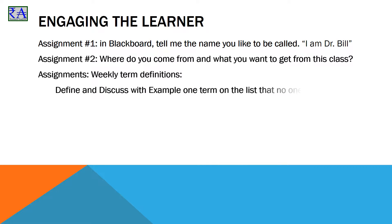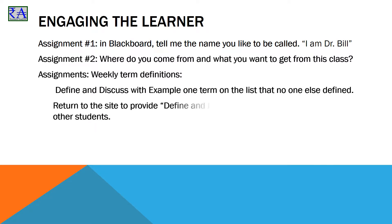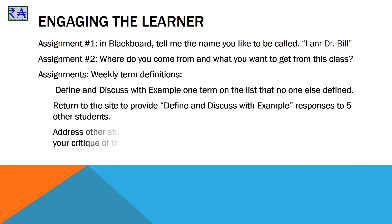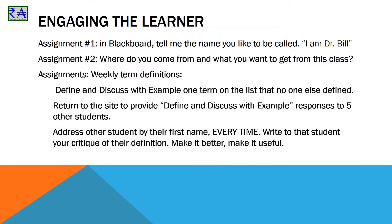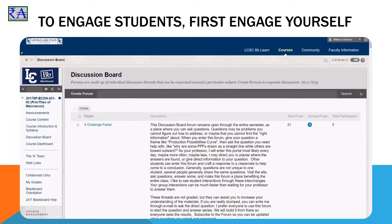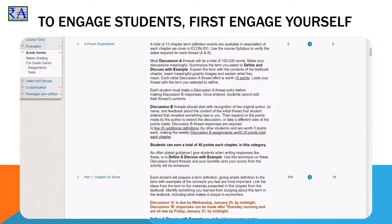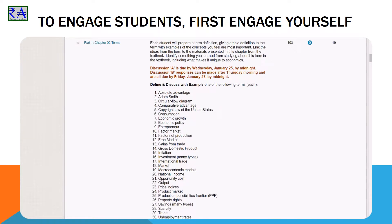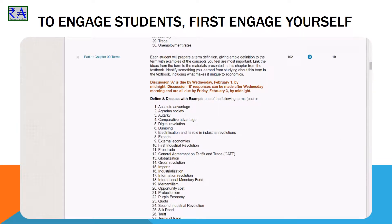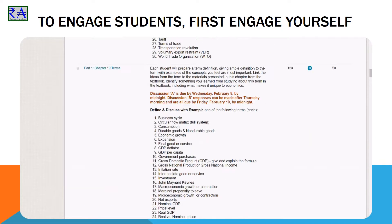Now we get closer to the contents of the course. Here I want to establish some contextual anchor words to study. Each economics class has term definitions and I let students select, first come first served, the term they will define and discuss with an example. They return in a day to respond to at least 5 other student definitions to improve the record. New examples are always welcome. Everyone is required to start a response by addressing the other students by name — it makes the anonymous threads vanish. The quality of discourse improves substantially when it becomes intentionally personalized.